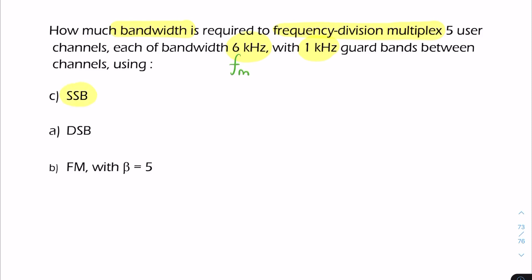The spectrum looks like this: you have your first channel, second channel, third, fourth, and fifth channels. They all have a bandwidth of 6 kilohertz. Remember, this is SSB, so the bandwidth equals the baseband bandwidth. Each of the modulated or bandpass signals will be exactly 6 kilohertz.